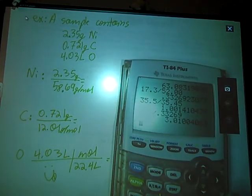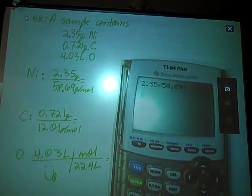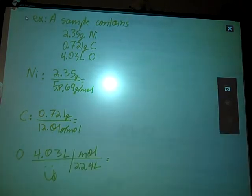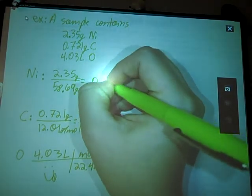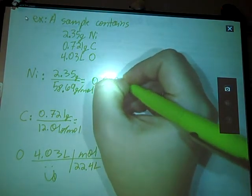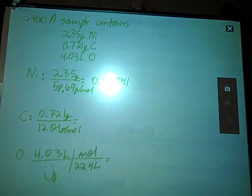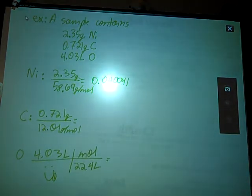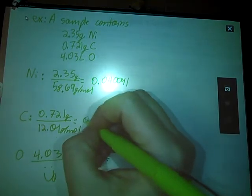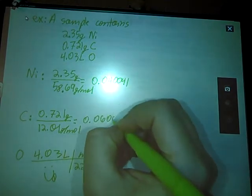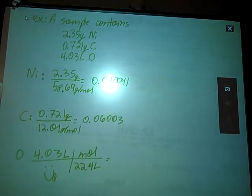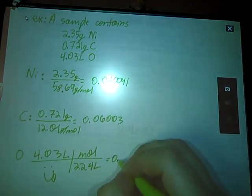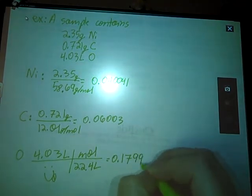So let's see here. 12.35 divided by 58.69, big long number, 0.040041. My next one, 0.721 divided by 12.01, 0.06003. And 4.03 divided by 22.4, 0.17991.